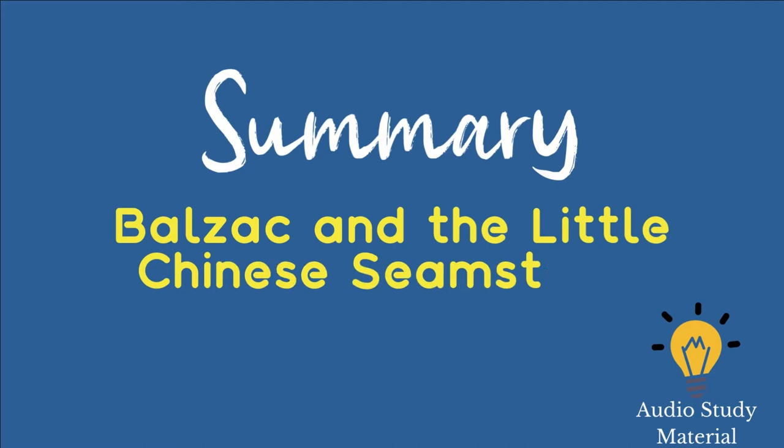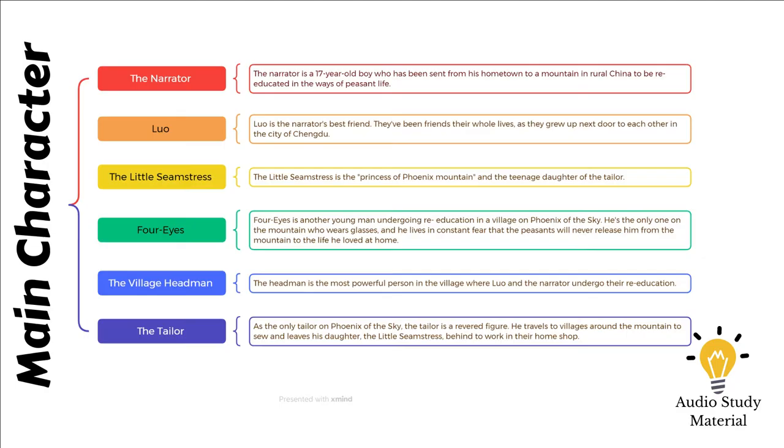Four Eyes suggests that his pals spend the night at his residence. When the narrator searches under Four Eyes' bed for a sweater for Luo, he discovers a small, hefty bag. Four Eyes won't comment on it, but when Luo mentions that it includes books, he becomes panicked.